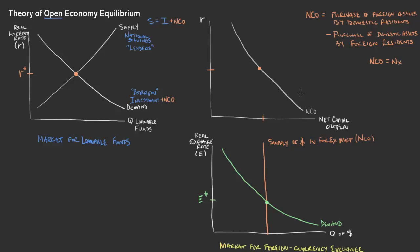There are a lot of details in the theory of open economy equilibrium — in the market for loanable funds when trade is allowed and in the market for foreign currency exchange — that can be difficult to grasp. So we're going to spend a few extra minutes going through some of the details here. The first thing we want to focus on is net capital outflow, which is really the connector between these two different markets: the market for loanable funds and the market for foreign currency exchange.